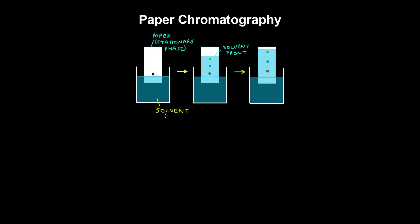If the solvent is polar like water, then the most polar component will travel the furthest — for example, the green component here — whereas the red component is the least polar. This solution comprising the different components of the substance is the mobile phase.